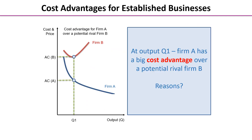Let's start to have a look at some of these, and in particular some of the cost advantages that an established business may benefit from. If you look at this diagram here, at output Q1, Firm A — the firm currently in the market — has a really big cost advantage over its potential rival Firm B. I'd like you to stop the video just for a couple of moments and see if you can come up with possible reasons for this.